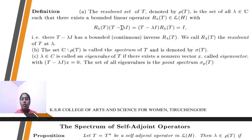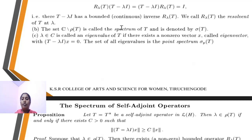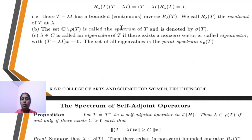Next definition: resolvent set, denoted by ρ(T). We write R_λ(T)(T − λI) = (T − λI)R_λ(T) = I. The resolvent T is denoted by R_λ(T). Next definition: spectrum, denoted by σ(T). Next: eigenvalue λ, eigenvector x. To find eigenvalue, we use the equation (T − λI)h = 0. Point spectrum is denoted by σ_p(T).